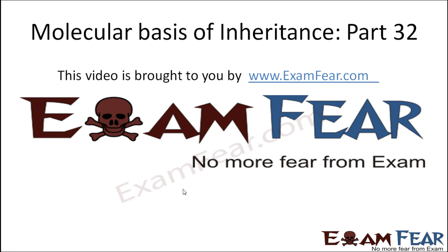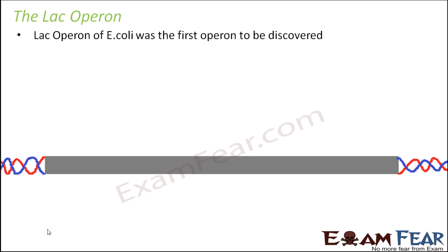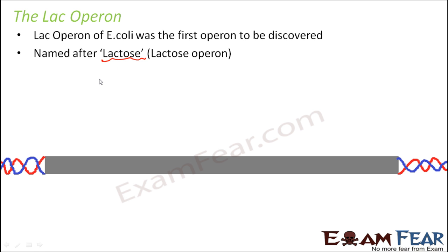This video on molecular basis of inheritance part 32 is brought to you by examfear.com. Let's start talking about the lac operon. The lac operon of E. coli was the first operon to be discovered — those French scientists came up with this concept of operon and first discovered this lac operon. It is named after lactose, that is, lactose operon.